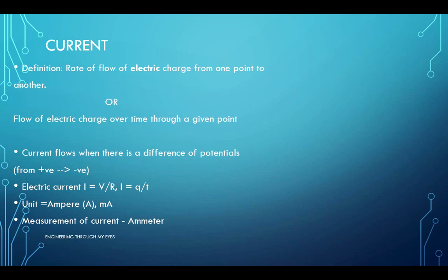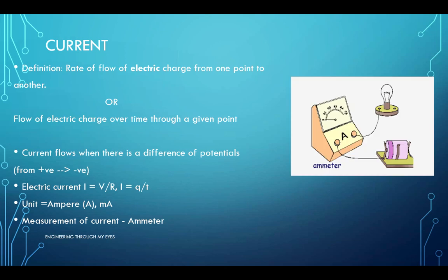Current is something which flows over time through a given point. It is defined as a flow of electric charge, or to be more precise, rate of flow of electric charge from a beginning point or a starting point to a destination point. The current always flows from positive to negative side. Electric current is measured by dividing voltage with resistance or by dividing coulomb over time. Its unit is amperes. It can be written as capital A or AMP. It's totally up to you. But the mostly followed unit is A.